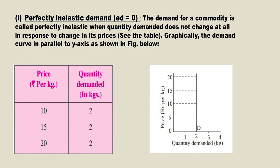Now we will understand diagrammatically as well as with the help of a table what these different types of elasticity of demand are. First, perfectly inelastic demand: the quantity demanded of the commodity does not change at all with changes in price. The price may increase or decrease but the quantity demanded remains the same. The table shows that price per kilogram changes from 10 to 15 to 20, but the quantity demanded remains the same. The demand curve is a straight line parallel to the y-axis, showing elasticity of demand is 0.